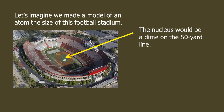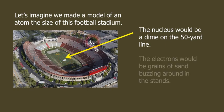That's the nucleus, the protons and the neutrons. And the electrons would be about the size of grains of sand that are buzzing around in the stands. And so that is your model of an atom that's really to scale.